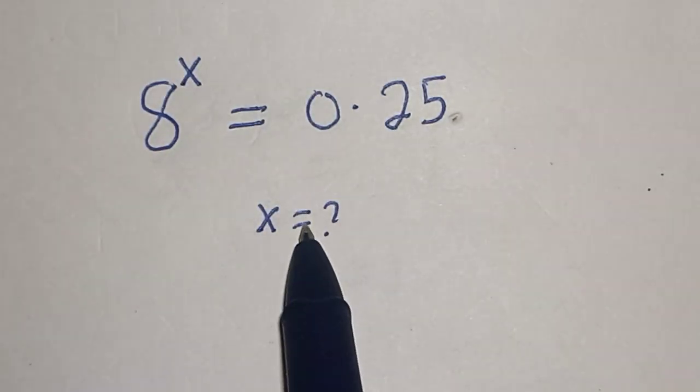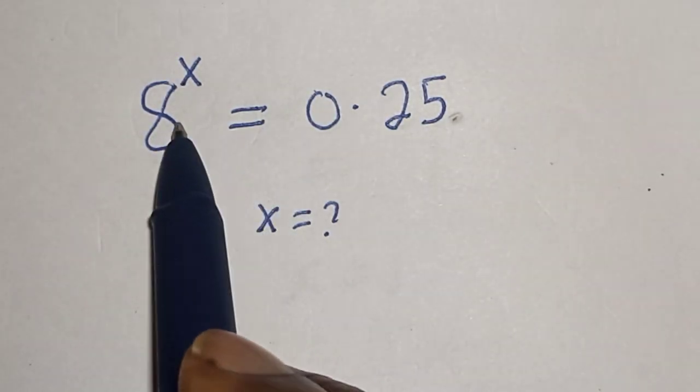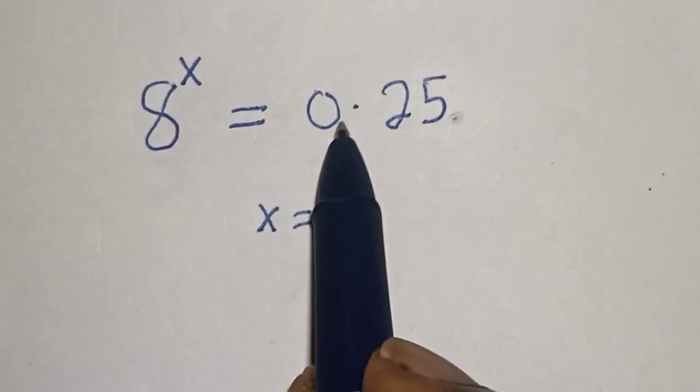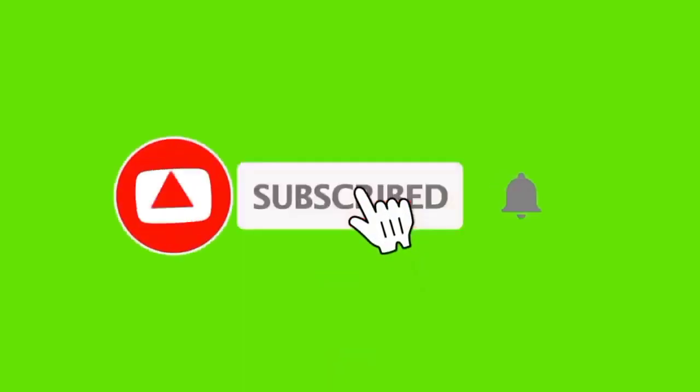Hello, welcome to Magist. In this class, we want to find the value of x from this equation: 8 to the power of x equals 0.25. Like, share, comment, and subscribe.